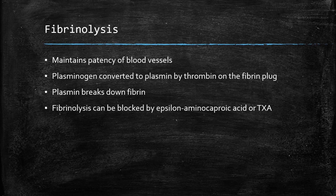The last step in the hemostatic control mechanism is fibrinolysis. Plasminogen is converted to plasmin by the actions of thrombin on the fibrin plug. The goal is for plasmin to break down fibrin, ultimately restoring patency to the occluded blood vessels. Clinically, we can have a situation of hyperfibrinolysis. This can be blocked by epsilon aminocaproic acid, or Amicar, and we're starting to see the use of tranexamic acid, or TXA, in the trauma setting.